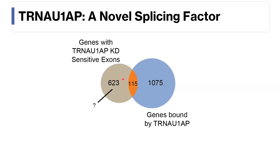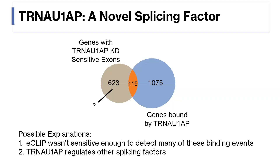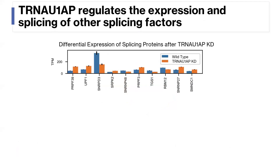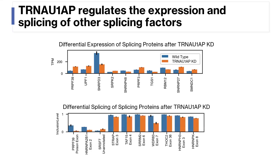Things also became interesting when we investigated the events on the left. We had two initial hypotheses for why there are so many knockdown-sensitive exons that don't have evidence of tRNA1AP binding: one is the limited sensitivity of the Eclipse assay, but another more interesting hypothesis is that tRNA1AP could be regulating other splicing factors. To investigate this, we looked at the top 10 most differentially expressed and the top 10 most differentially spliced splicing-associated proteins after tRNA1AP knockdown.